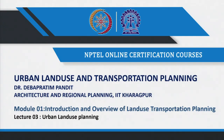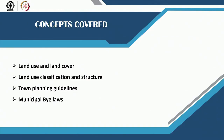Welcome to Lecture 3, which will be on urban land use planning. The key concepts covered in this lecture are land use and land cover, land use classification and structure, and town planning guidelines and municipal bylaws. These are considered so that we can also discuss how they influence integrated land use transportation planning.